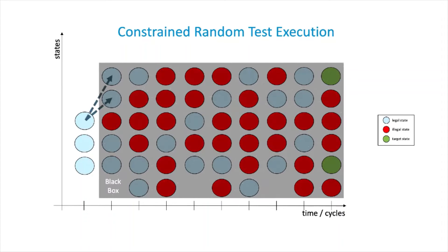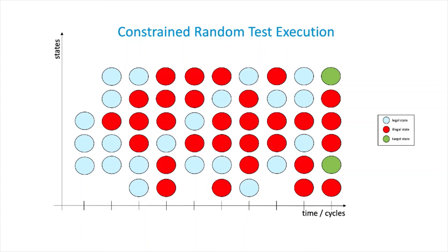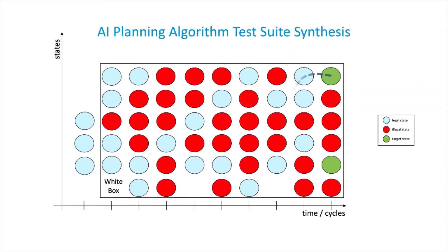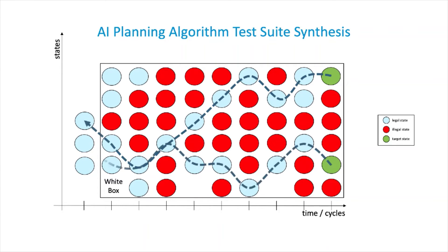Coverage-driven test generation leverages AI planning algorithms to exercise the most obscure, deep sequential, corner case states to find the toughest bugs.